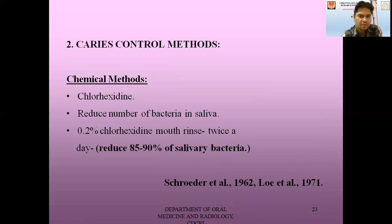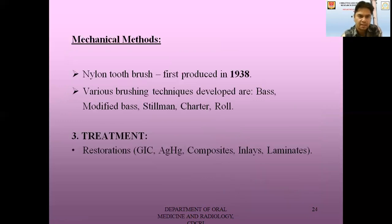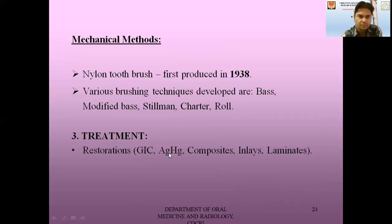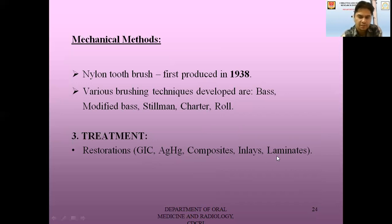There are some caries control methods, classified as chemical and mechanical. In the chemical method, we use chlorhexidine — it reduces the number of bacteria in saliva. Use of 0.2% chlorhexidine mouth rinse twice a day reduces salivary bacteria by 85 to 90%. In the mechanical method, we have the nylon toothbrush, first produced in 1938, and various brushing techniques: BAS method, modified BAS method, Stillman method, Charter method, Rawls method, and Fones method, used in different circumstances. For treatment of caries, we can go for restorations such as silver amalgam, GIC, composites, inlays, laminates, and so on.